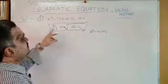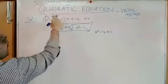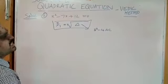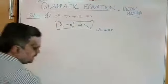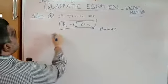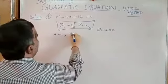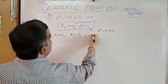First, consider the question. Solve x square minus 7x plus 12. Here, a is equal to 1, coefficient of x square. b is equal to minus 7. c is equal to 12. We apply the formula.